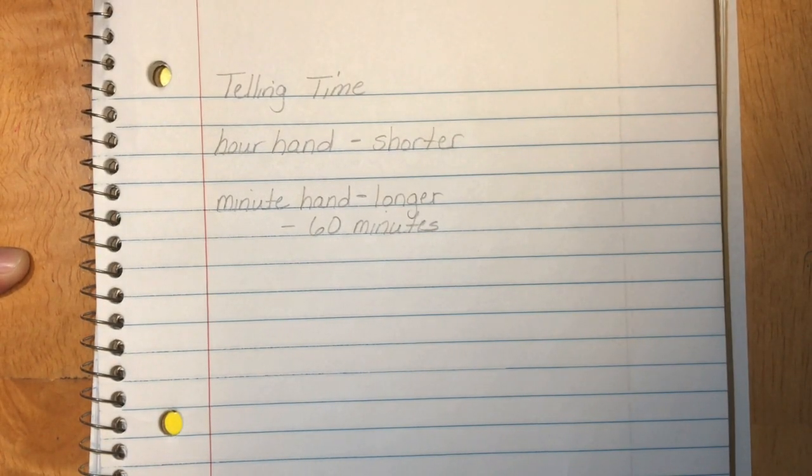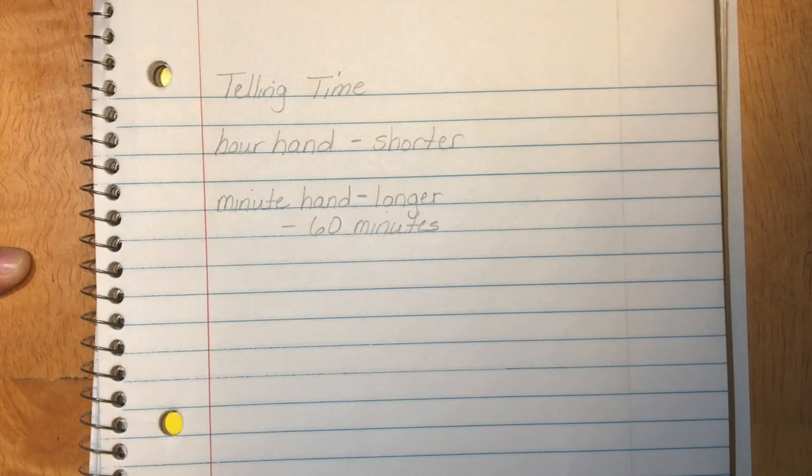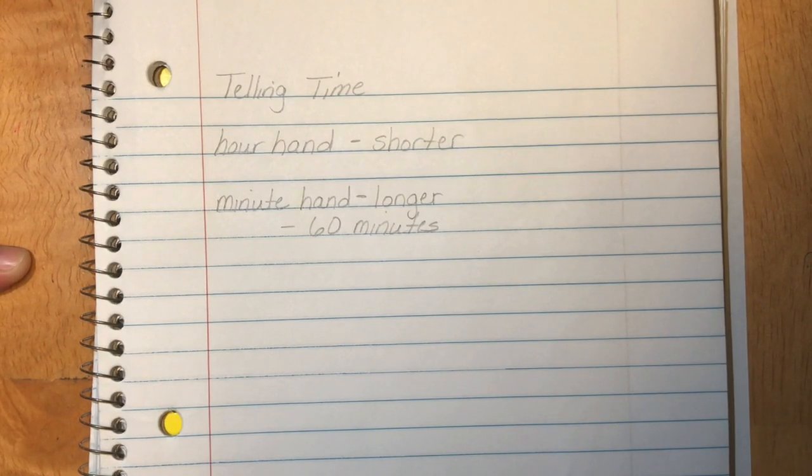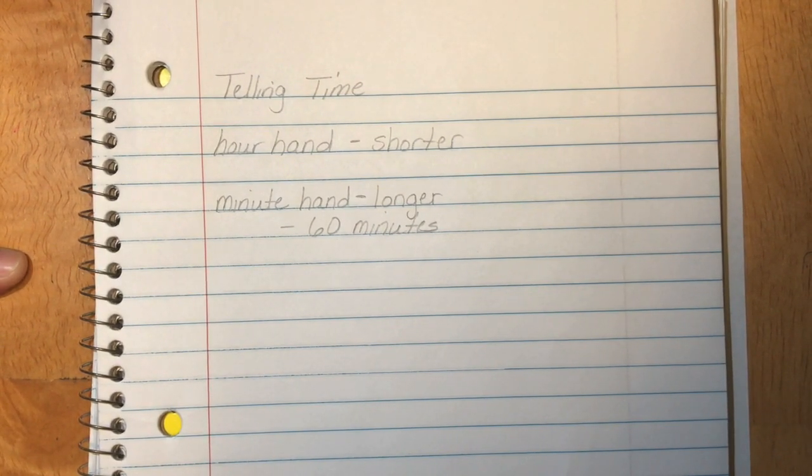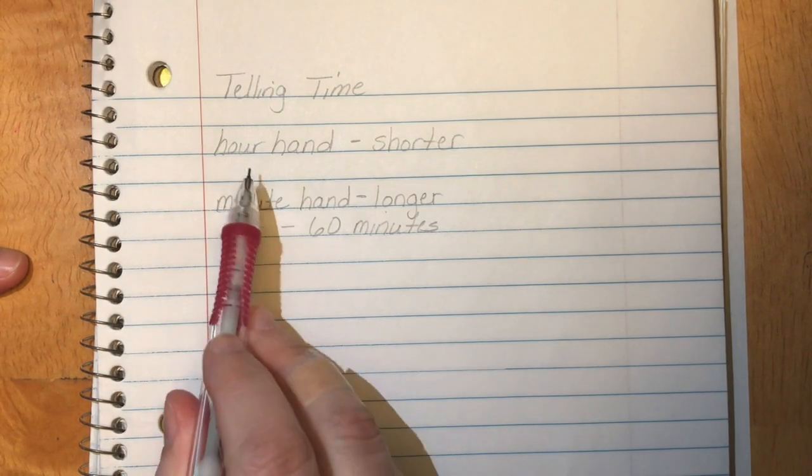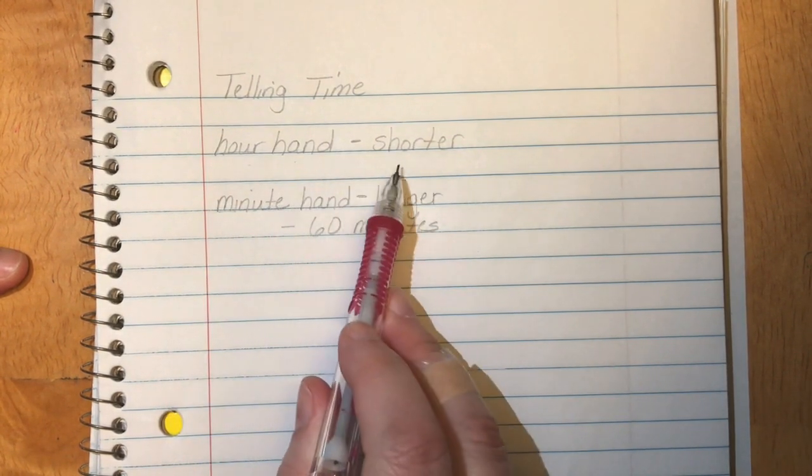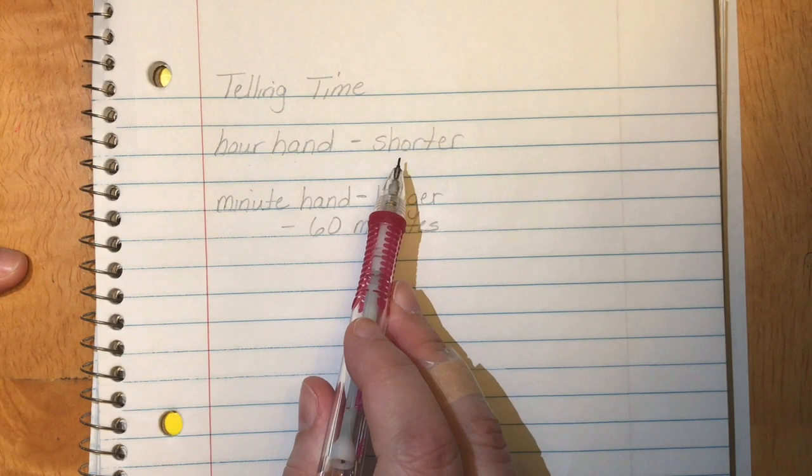In this video we're going to talk about telling time on an analog clock. This is different from a digital clock in that you have to read the hands that are shown. So when we're talking about an analog clock, the hour hand is the shorter of the two hands on the clock.